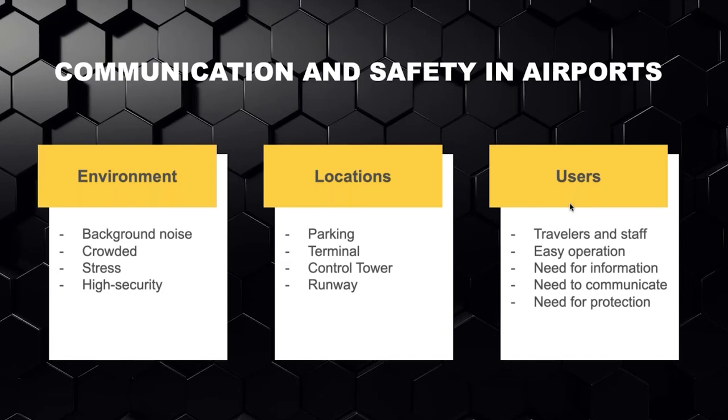You should also be looking at the users: which people are going to use the system? What communication needs do the travelers have? What communication needs are important for the staff? What other communication systems do they use — should there be an integration between those different systems? Should security systems be integrated? What will be the best operation for this setup, and will that determine if we should have an integration or a separate system? Both travelers and staff have a lot of need for information, need to stay informed in any situation, need to be able to communicate, and need to be protected in case of any incidents.